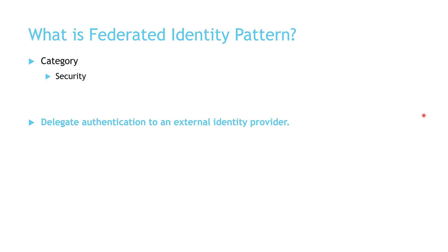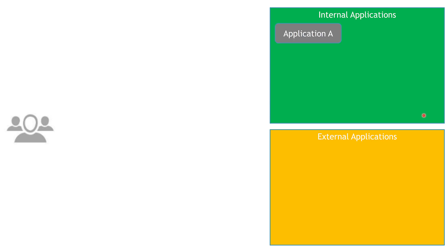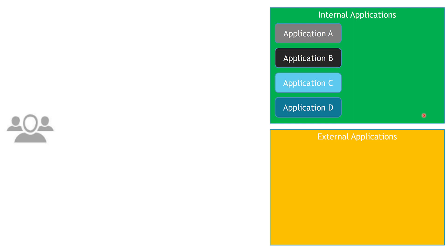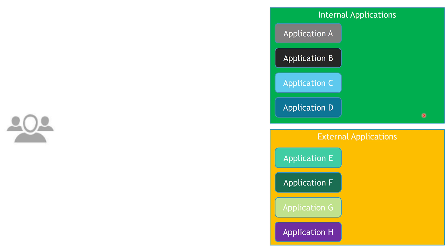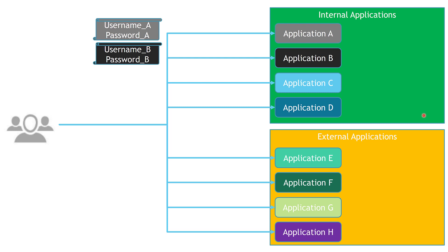Let's dive straight into an example to help us understand this better. Let's say you have a group of employees in your organization that need to access some internal applications as well as external applications. At this point, we don't have any authentication handled using Active Directory, so each of these applications has its own authentication module. Employees would need to remember different usernames and passwords for each application.